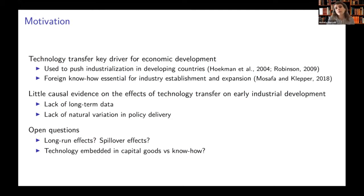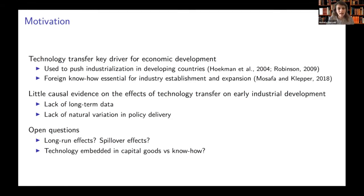Despite the importance of technology transfer on economic development, we know little about its causal effect on industrialization, mostly because of lack of long-term data that are able to follow firms and countries involved in these policies over time, and because of lack of variation in how these policies are delivered. We think there are two major open questions about the long-run and spillover effects of technology transfer, but also about disentangling the difference between the transfer of technology embedded in capital goods versus the transfer of foreign know-how.